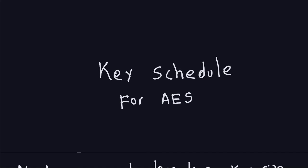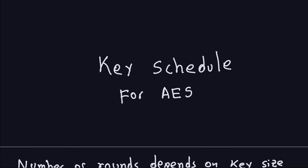Hello and welcome again. In the previous video, we discussed the last part of the rounds, which was the mix columns operation. Now, the last thing we have to do for the Advanced Encryption Standard is to discuss the key schedule. We also have to discuss how to decrypt using the AES, but for now let's look at the key schedule. It's also very involving and has a lot of structure inside it, so we'll do this in maybe one or two videos.